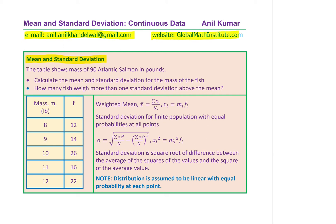The question is: the table shows mass of 90 Atlantic salmon in pounds. When it says in pounds, it really means the figures are rounded — rounded to the nearest pound. Calculate the mean and standard deviation for the mass of the fish. How many fish weigh more than one standard deviation above the mean? These are the two questions to be answered, part a and part b.